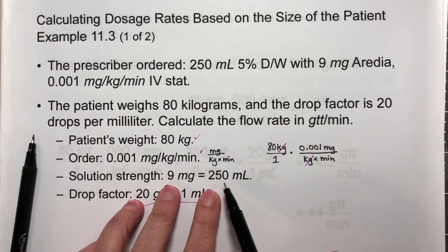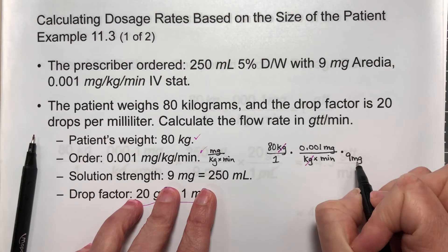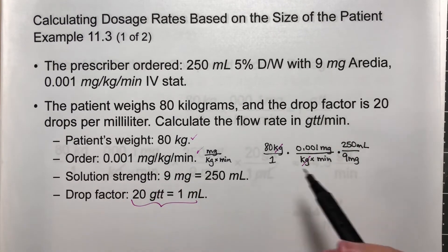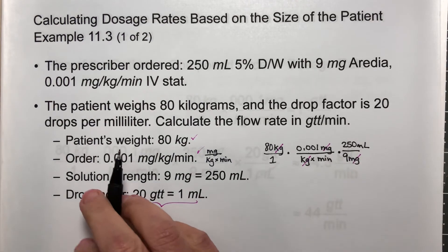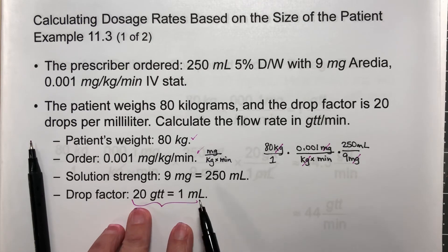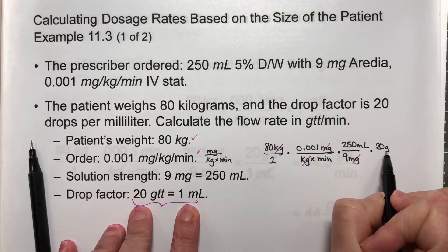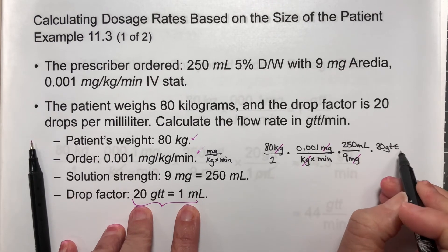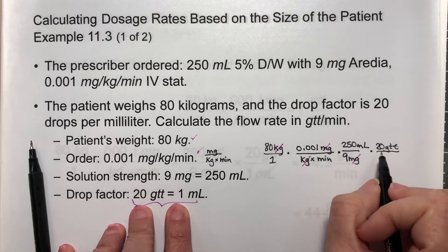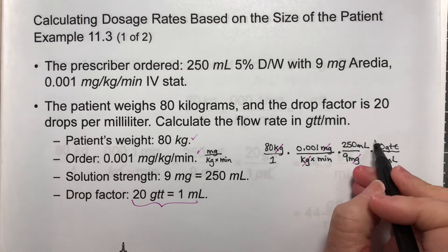To cancel out the milligrams, I'm going to make a unit fraction out of this, and I'm going to put the milligrams in the bottom so that they cancel out: 9 milligrams over 250 milliliters in the top. That is going to allow me to cancel out the milligrams. I'm almost there. I have minutes, I have milliliters in the top, so I do this conversion. I'm going to multiply by 20 GTT over 1 milliliter. Now my milliliters are going to cancel out, and I have GTT and minutes.